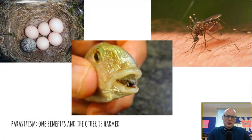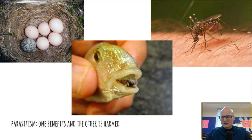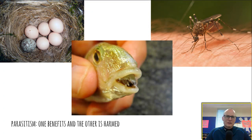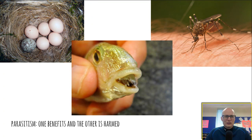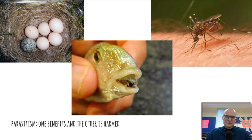Parasitism — one organism benefits and the other is clearly harmed. Mosquitoes' effect on mankind is well documented through the parasites they carry in their effort to get blood. There's also a disgusting fish parasite attached to a fish's tongue. In the upper left, one species of bird is a parasite on the nest of another — the nest owners end up raising the freeloader for free. Or the intruding bird will actually push the other eggs out and take over the nest before the parents realize it, and by then it's too late.